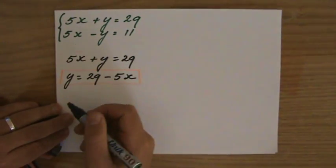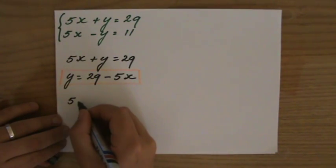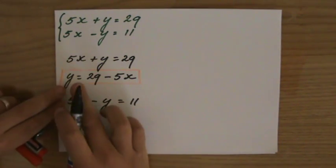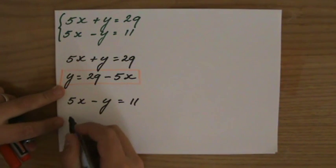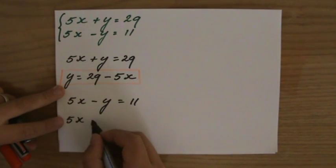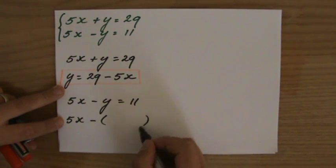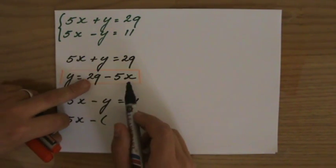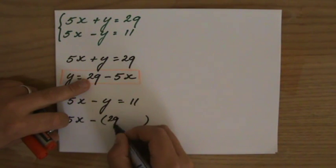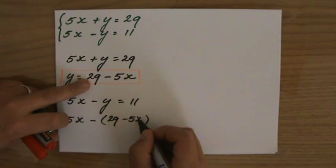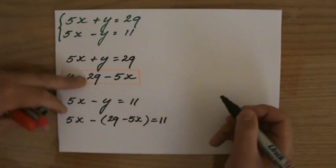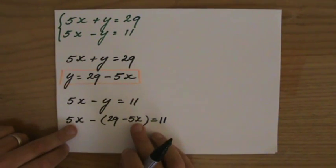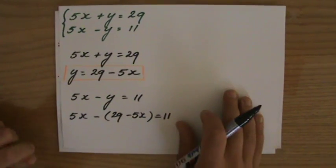I've got to substitute this information in the other equation. So let me write down the other equation which is 5x minus y equals 11. Then I say, well, y equals 29 minus 5x. I'm going to substitute that. I always use those brackets. So instead of y, because these are the same y's, I'm going to write down now 29 minus 5x. And that still equals 11. Now I have one equation with one unknown which is x so I can solve that. No problem.